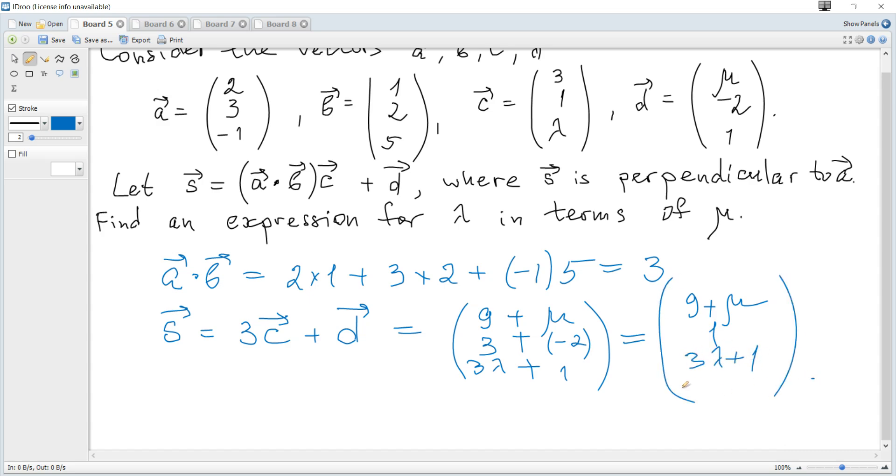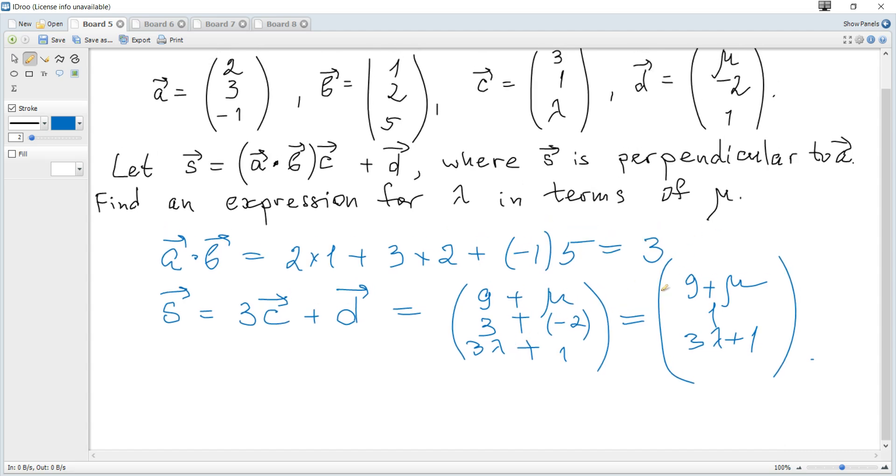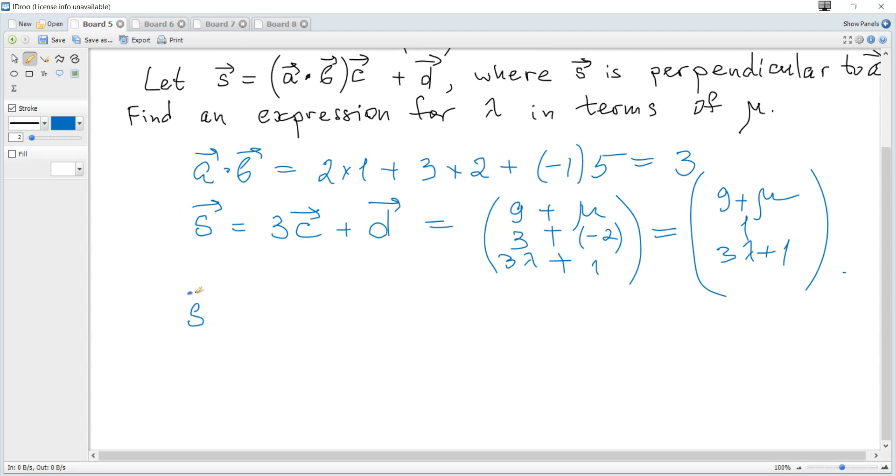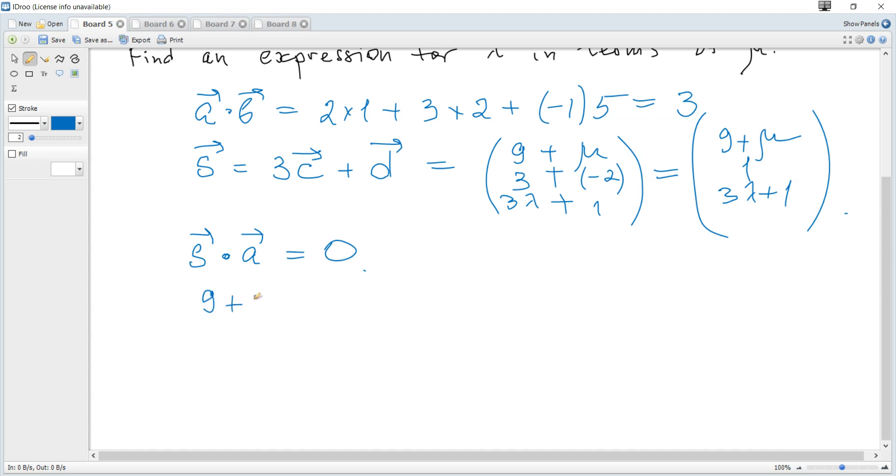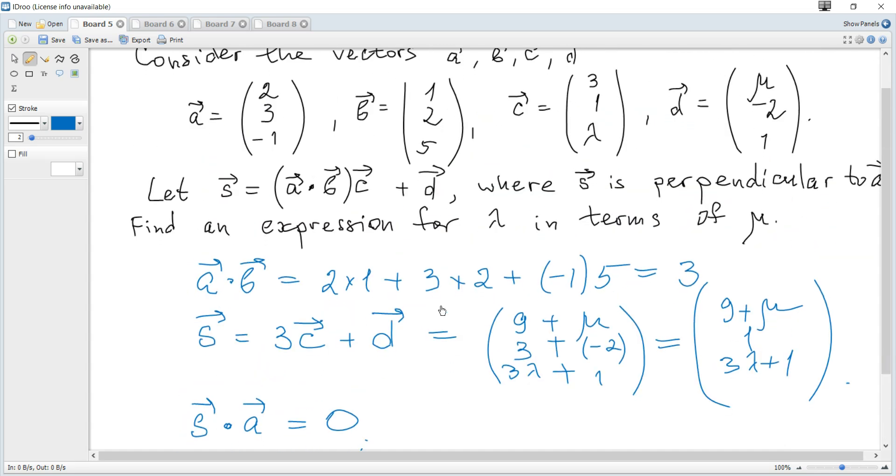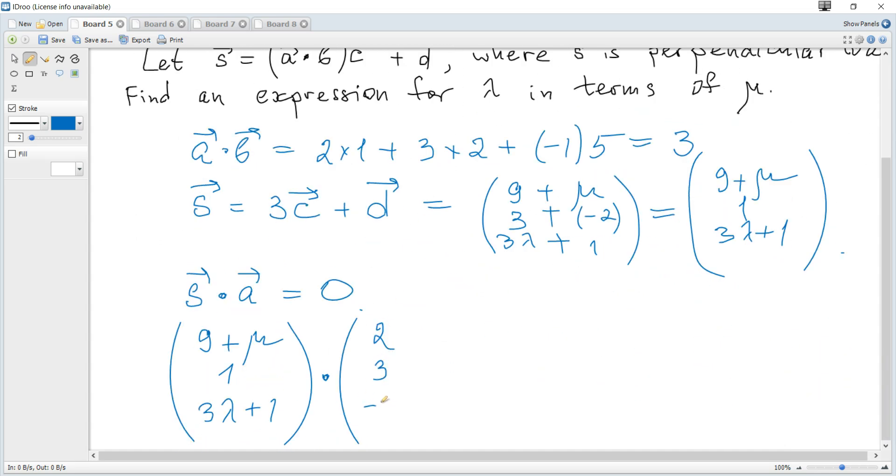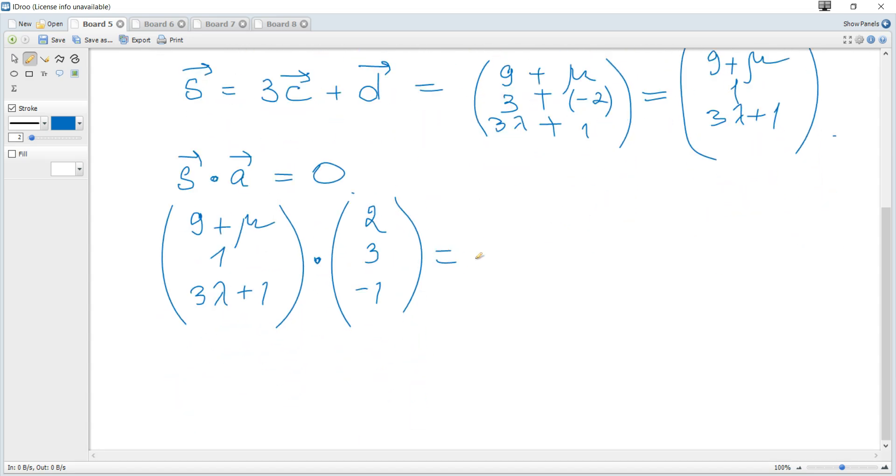And then this vector s is perpendicular to a, and if two vectors are perpendicular, dot product or scalar product is 0. So 9 plus mu, 1, 3 lambda plus 1, dot product a. What is a? 2, 3 negative 1. Should be 0.